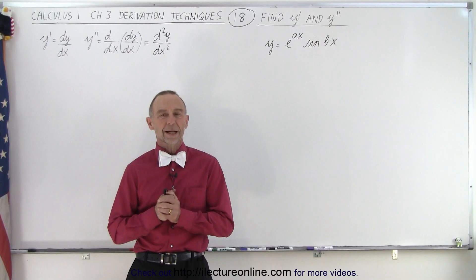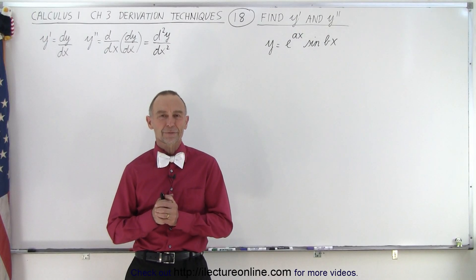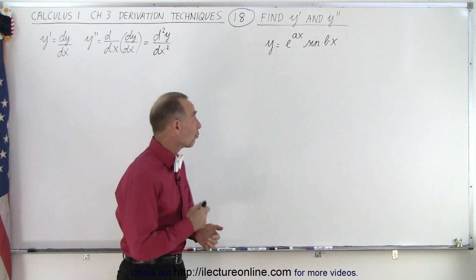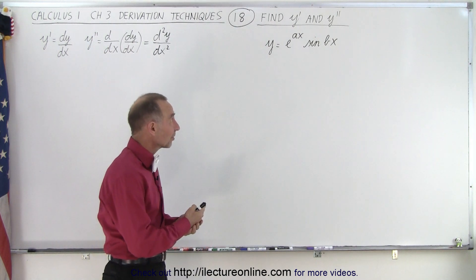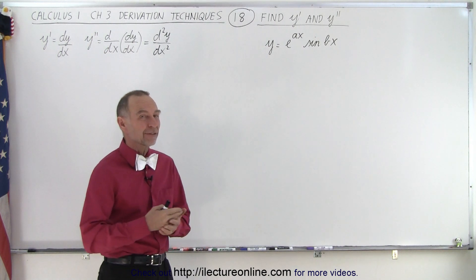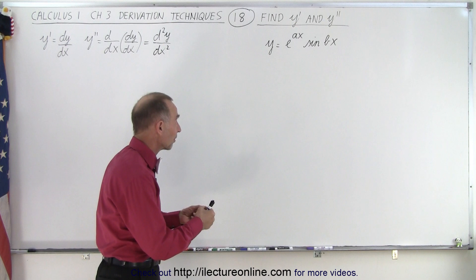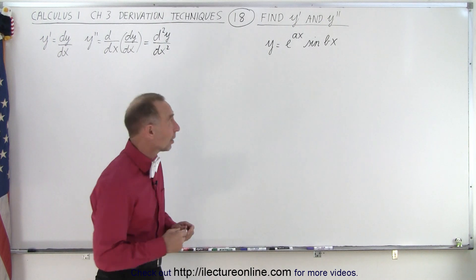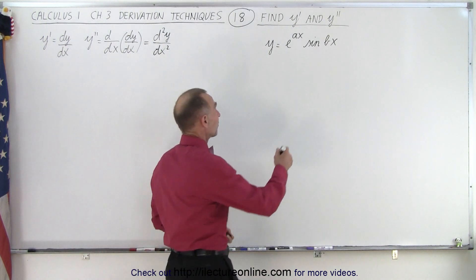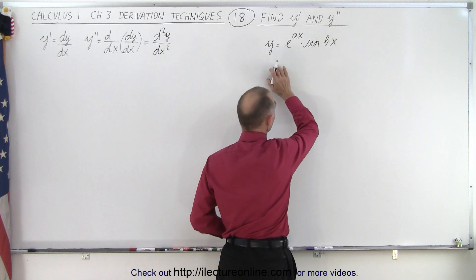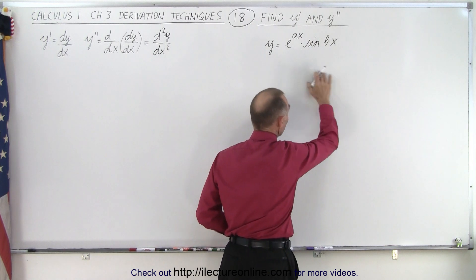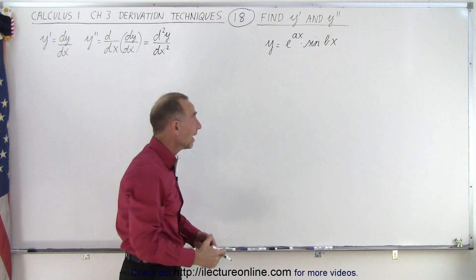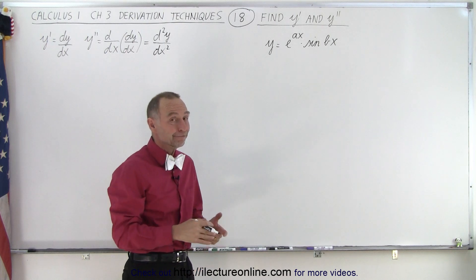Welcome to our lecture online. Now for something a little bit more challenging. Here we have y equals e to the ax times the sine of bx, and we need to find the first derivative and the second derivative. Notice in the first derivative we already have a product, so we're going to need to use the product rule — we'll end up with something that's kind of messy, and then we need to take the derivative again.